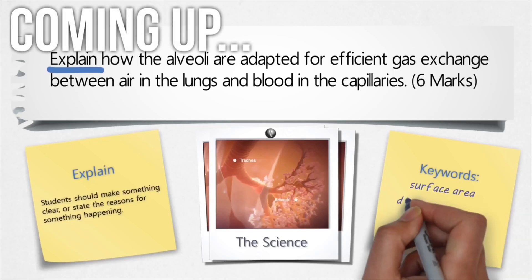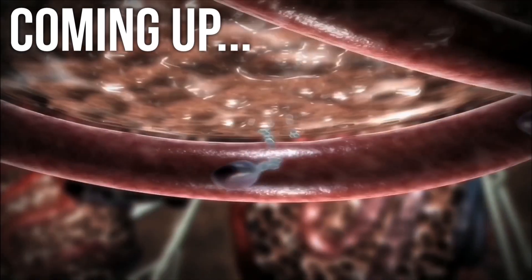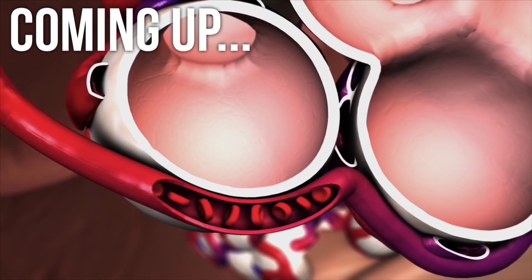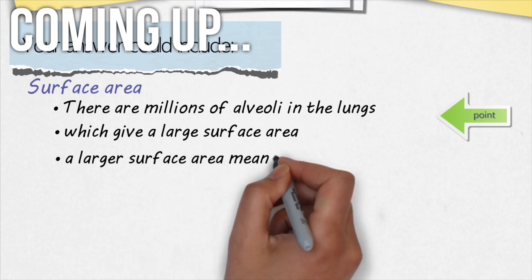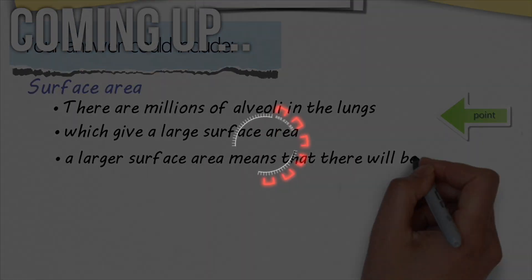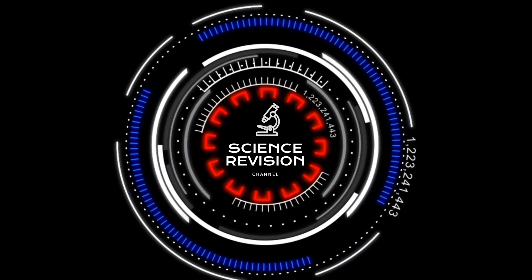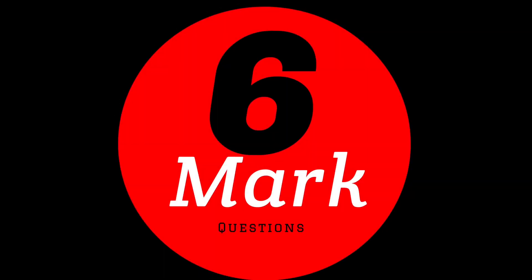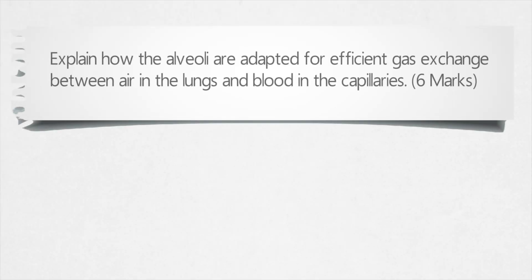Coming up, we look at a six mark question to do with gas exchange and the alveoli. We look at the science behind the alveoli and how gas exchange is possible, and we look at how to structure the answer. Today's six mark question is: explain how the alveoli are adapted for efficient gas exchange between air in the lungs and blood in the capillaries.